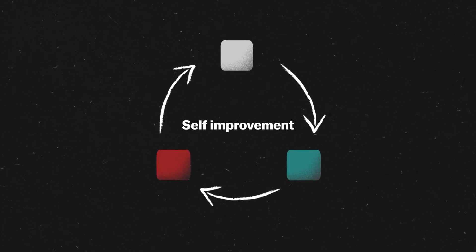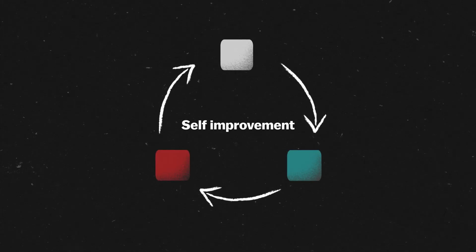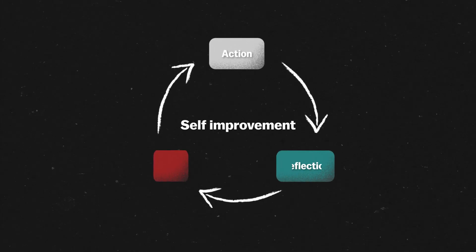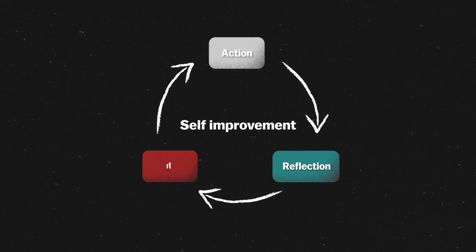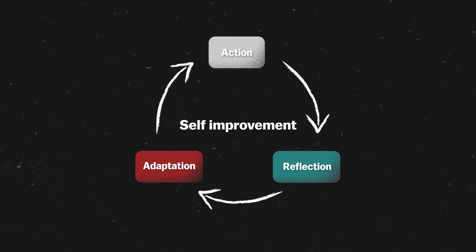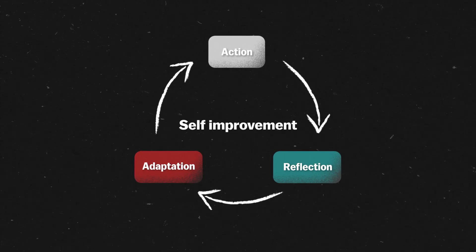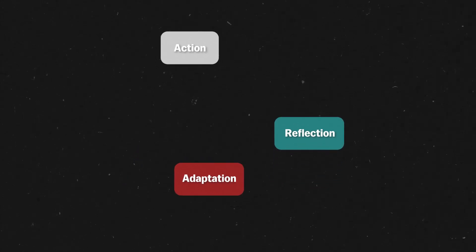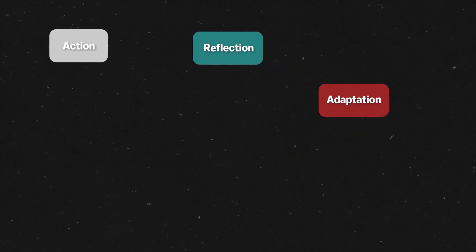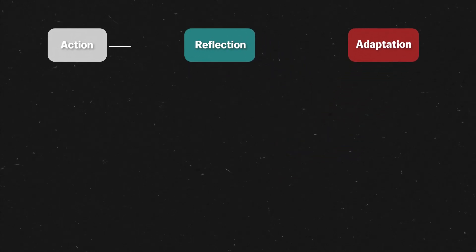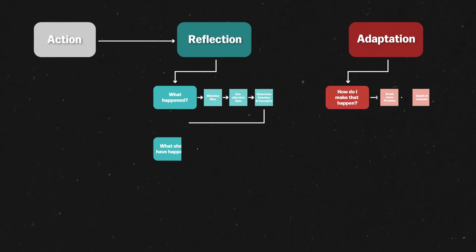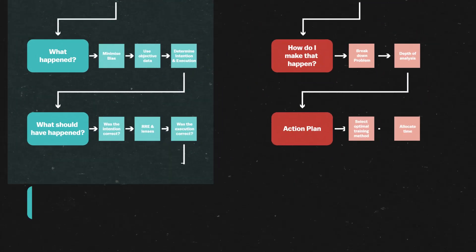Most self-improvement boils down to three stages. First, we perform an action, we then reflect on this action, and then we change and adapt our actions based on feedback. Action, reflection, adaptation. There's not really anything fancy going on on the surface, so the reflective cycle might sound bland and obvious to some people.